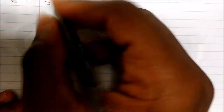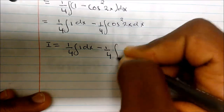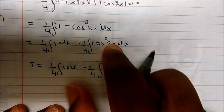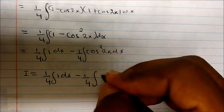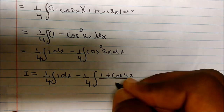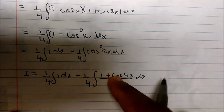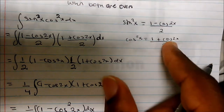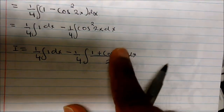My integral is 1 fourth times the integral of 1 dx minus 1 fourth times the integral of cosine squared of 2x. We have to be very careful here: cosine squared of x is (1 plus cosine 2x) divided by 2, but because we have 2x inside, this actually becomes (1 plus cosine 4x) divided by 2. The 2 inside gets multiplied, so we get cosine of 4x. You've got to remember that 4x.